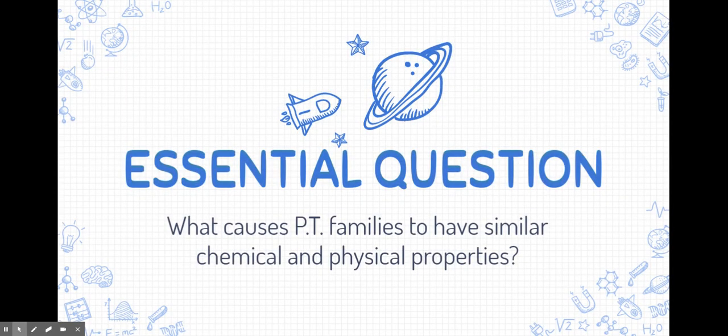As always, I would write the essential question at the top and really try to think about it as you go through the notes. What causes periodic table families to have similar chemical and physical properties?